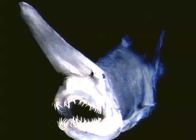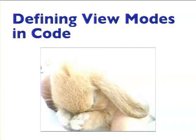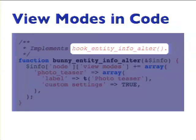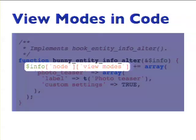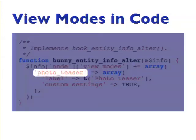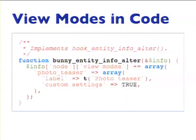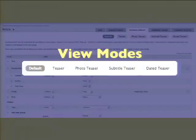Finally, the way I personally tend to do it: defining view modes in code. It's just a little bit of code — not a big deal. You implement hook_entity_info_alter, specifically altering the entity info for the node and adding view modes. You just create a machine name — 'photo_teaser' — give it a label, and 'custom_settings = true' means it will be on by default, so you don't even need to bother with those checkboxes. Six lines of code. You just throw that in a module somewhere. Once we do that, we have our view modes and can get up and running.